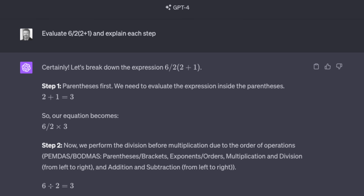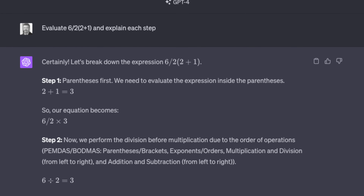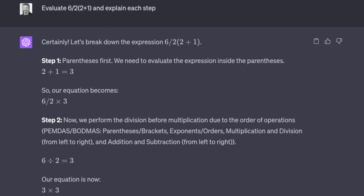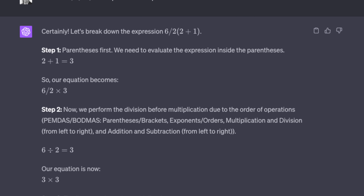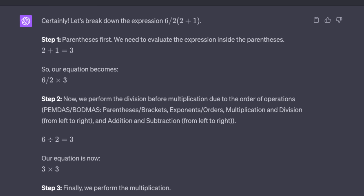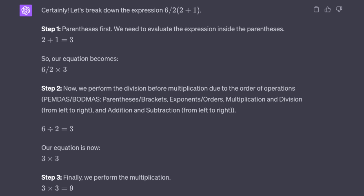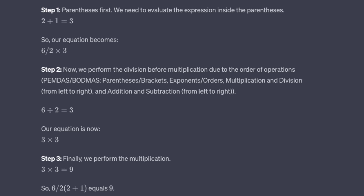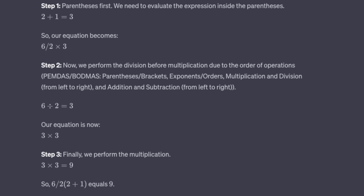Both ChatGPT 3.5 and ChatGPT 4 get the correct answer. ChatGPT 4 is a little better at explaining its work. Step 1 — parenthesis first: it evaluates 2 plus 1 and replaces it with 3, making the equation 6 over 2 times 3. In Step 2, it performs the division before the multiplication because those operators are of equivalent precedence, and therefore proceeds left to right. That leaves us with 3 times 3, which is 9 — the correct answer.